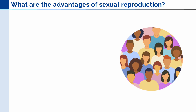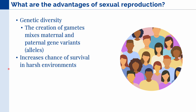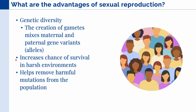What are the advantages of sexual reproduction? Why is it that some organisms use this type of reproduction, while others simply divide themselves into two? The first and main reason is for genetic diversity. In prokaryotes, they also have genetic diversity, but in organisms that use sexual reproduction, the diversity is much more controlled. This is because the creation of gametes, or haploid cells, mixes the maternal and paternal gene variants, or what we know as alleles. By doing this, it increases the chance of survival of the organism in harsh environments. At the same time, this can also help remove harmful mutations from the population, because in sexual reproduction, especially in higher organisms like animals, species can choose who they would like to mate with, and by doing that, it removes harmful mutations which create less-fit organisms.